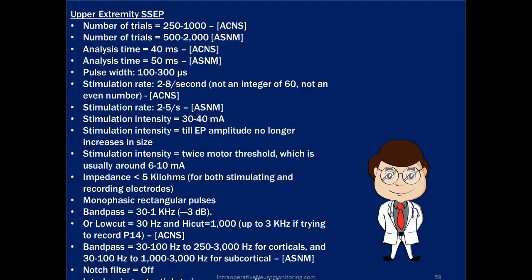Analysis time, or the total time on your screen, is usually broken up per division. In the lower extremity you might use 10 per division with 100 milliseconds analysis time, since corticals come in around 40 milliseconds. For the upper extremities, analysis time is 40 to 50 milliseconds according to the guidelines.